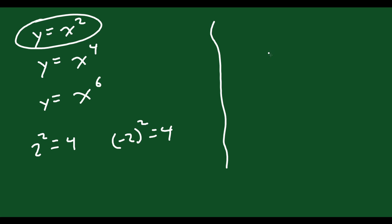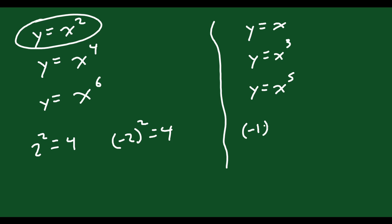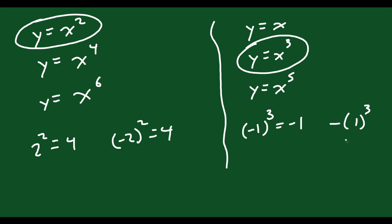For odd functions, some examples are y equals x, y equals x cubed, y equals x to the 5th. These are odd functions because if you plug in, say, negative 1 for x into x cubed, negative 1 cubed is negative 1. And the negative of positive 1 is also negative 1 — so these all qualify as odd functions.